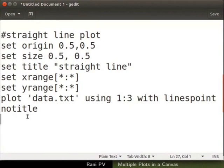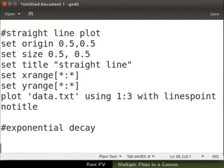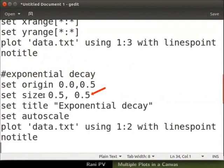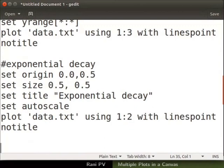Let's write the part of the script to generate the exponential decay plot. I will type hash exponential decay for the comment line. For this plot, set the position above the sinx plot in the top left corner. Set the size, title for the graph and auto scale the data. Read in the columns for X and Y data from the data file in the plot command. Here it is column 1 and column 2 for X and Y data. I will leave a blank line after this.